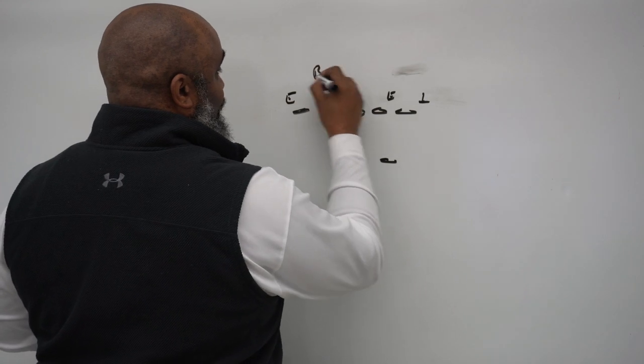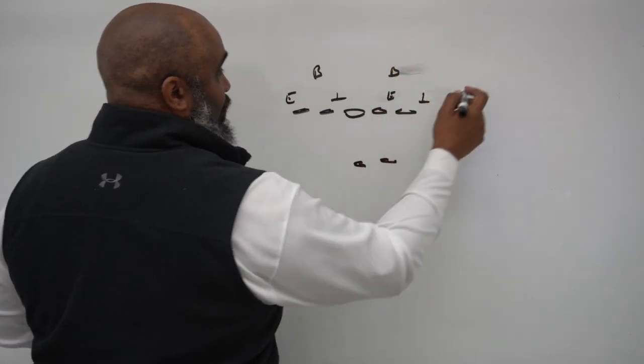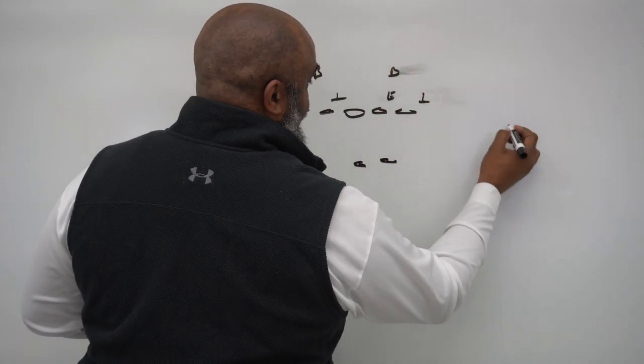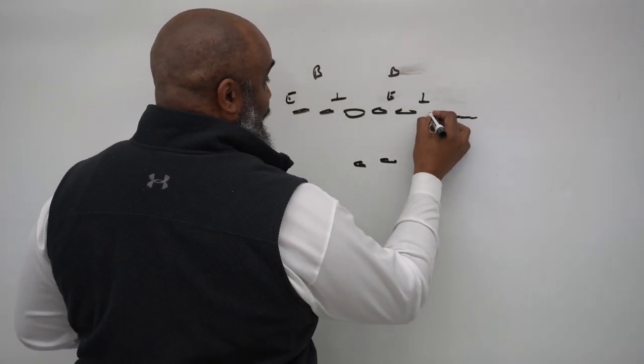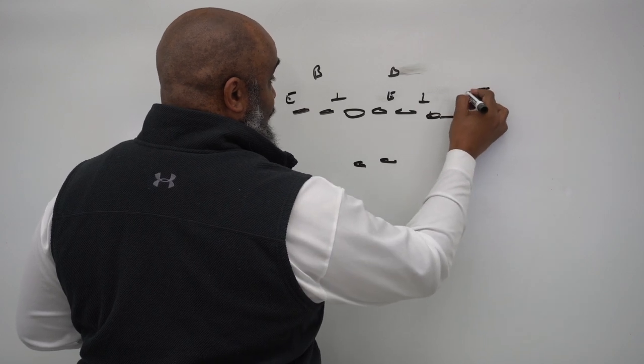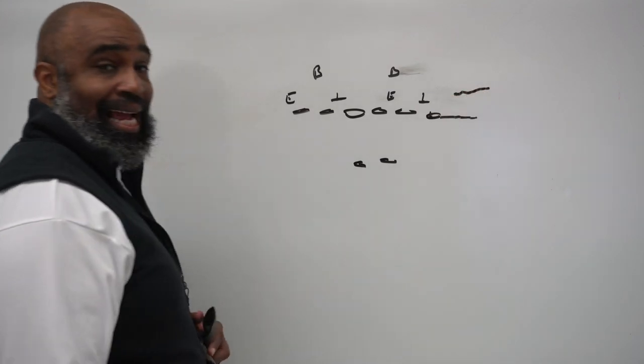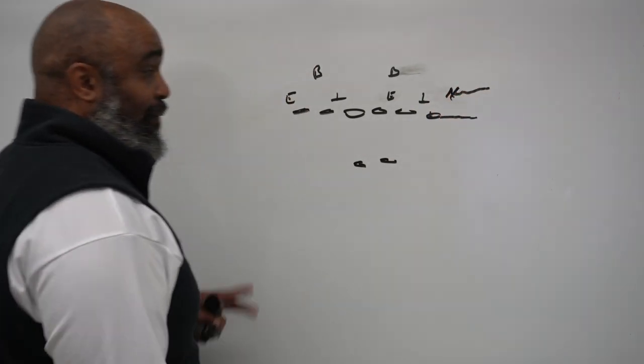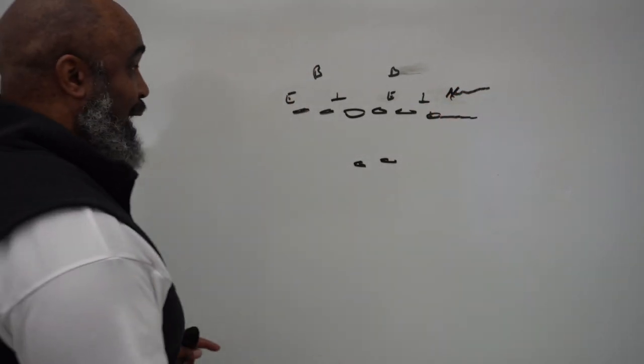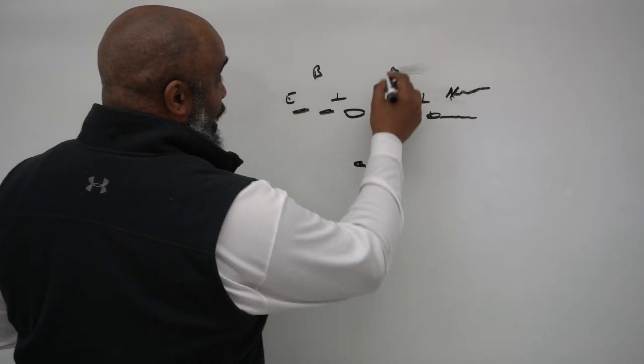And so now, what a lot of teams like to do, they'll motion a guy in like a tight end and try to put the tight end right there. And now all we do is just motion a guy in right there with him. So that might be like Kyle Hamilton or something like that. But now you're looking at your nickel, which is Kyle, in the same box, same type box stuff.